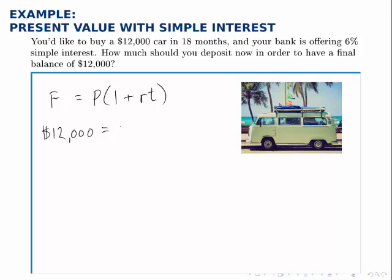The present value is still unknown, that's what we're going to solve for. The interest rate is 6%, so we write that as 0.06.